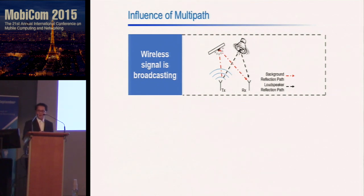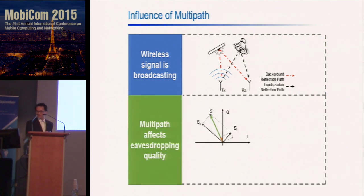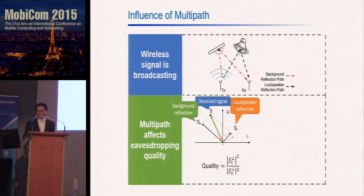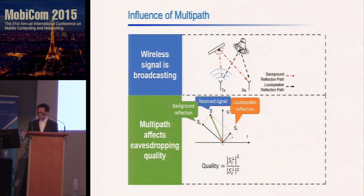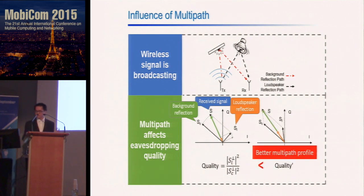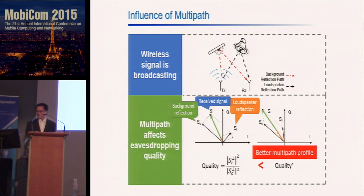To understand how multipath affects audio quality, we model the two reflection components in the phasor domain. The audio quality is determined by the ratio of the signal strengths of these two reflective components. A different multipath profile gives different audio quality, and as shown in the figures, the right case will definitely have better audio quality than the left case.